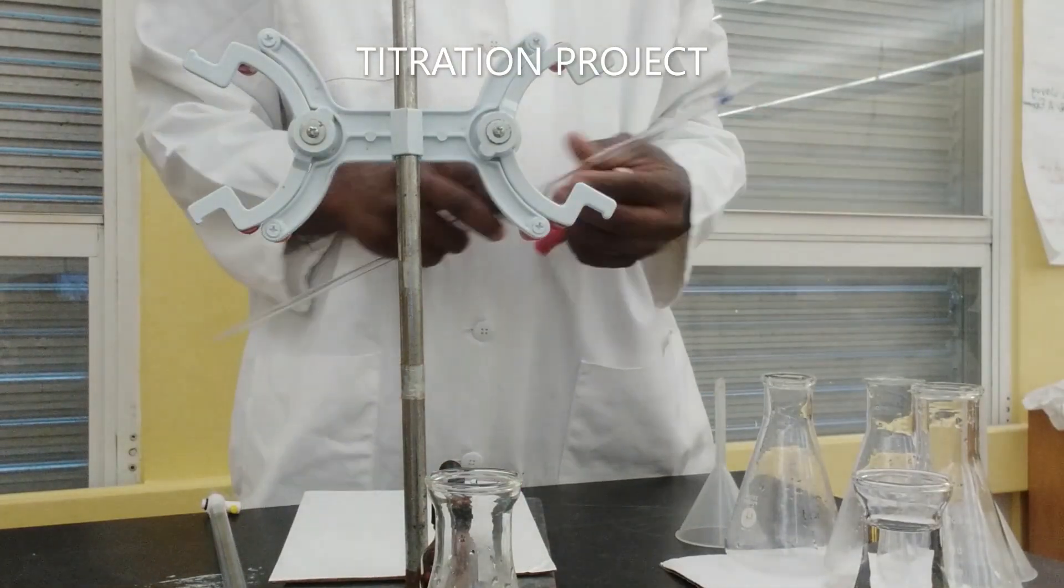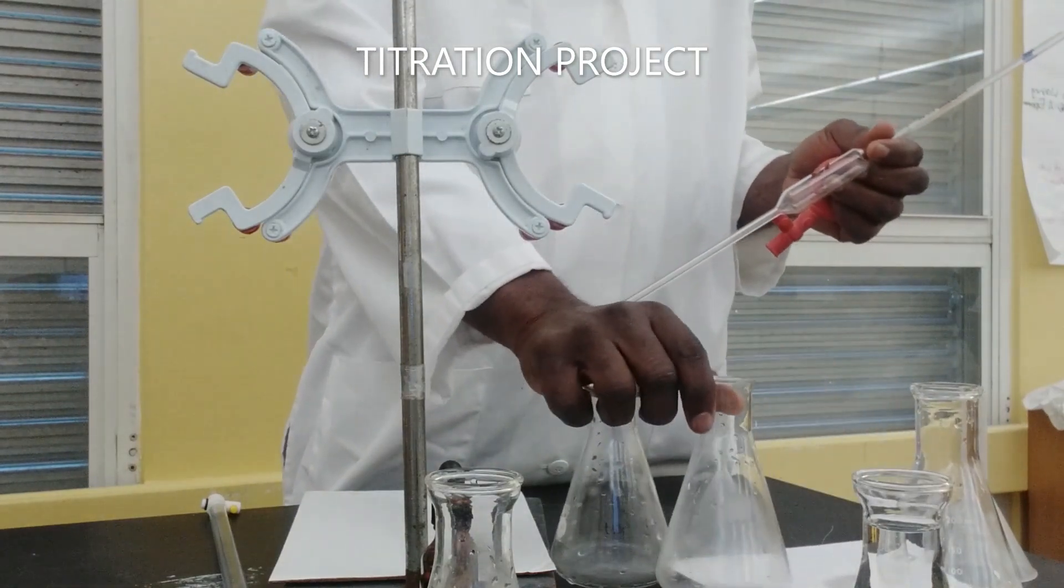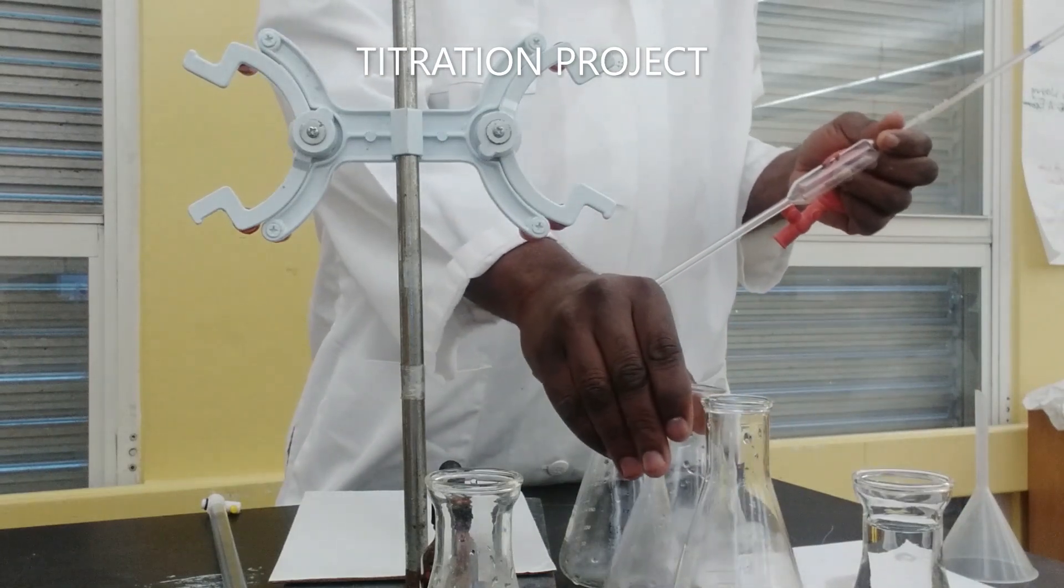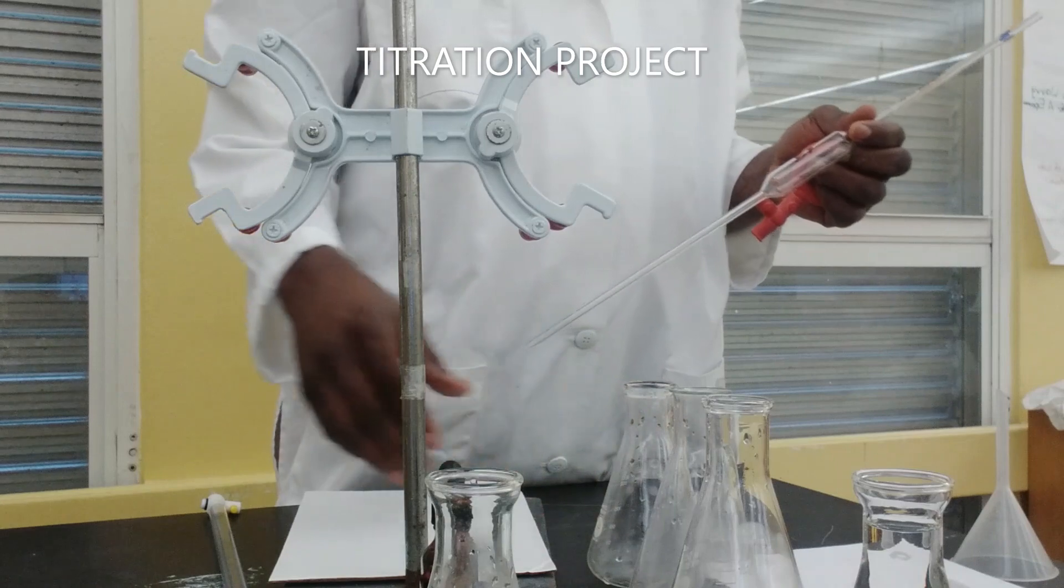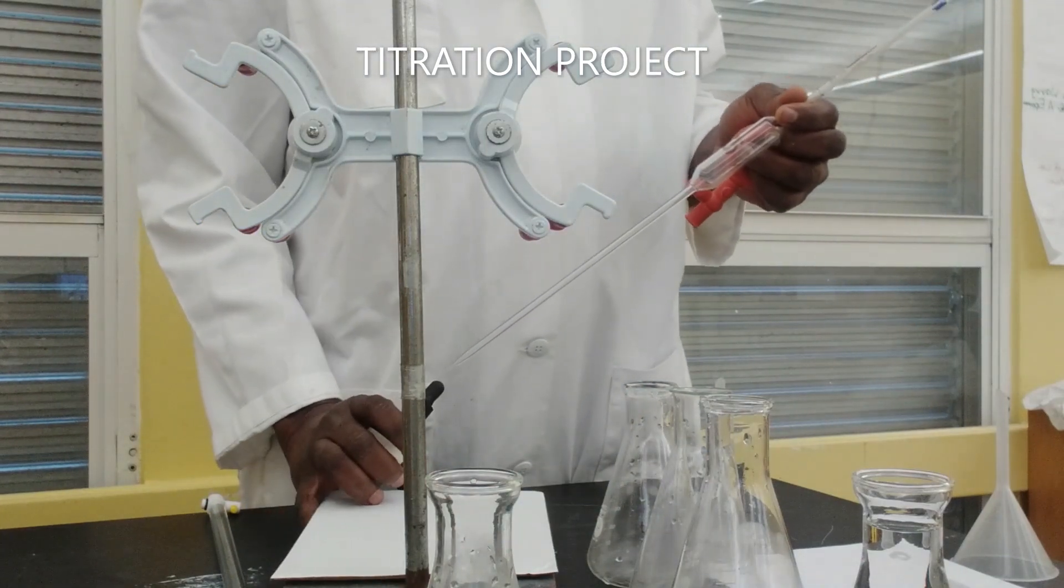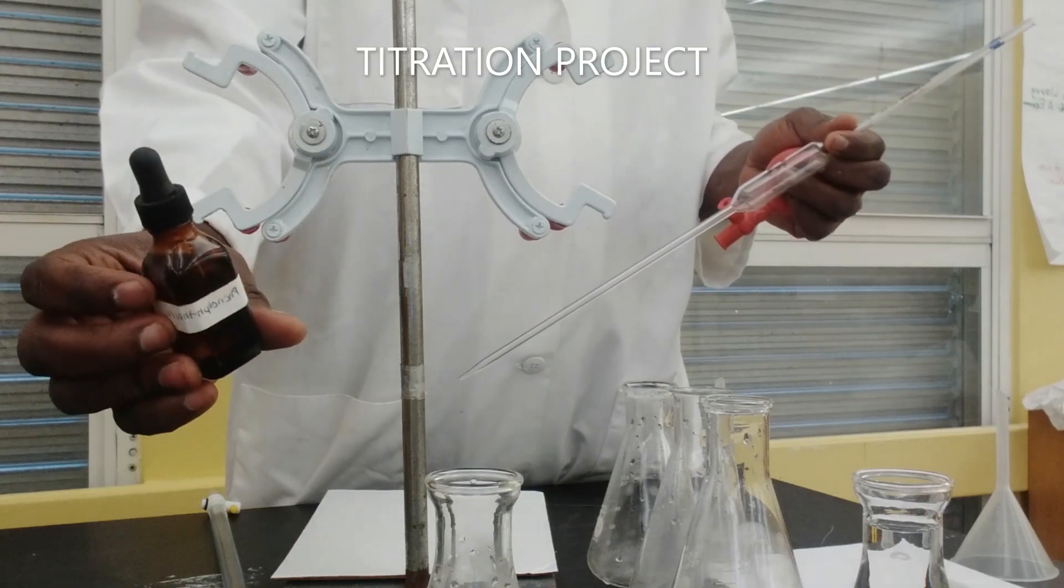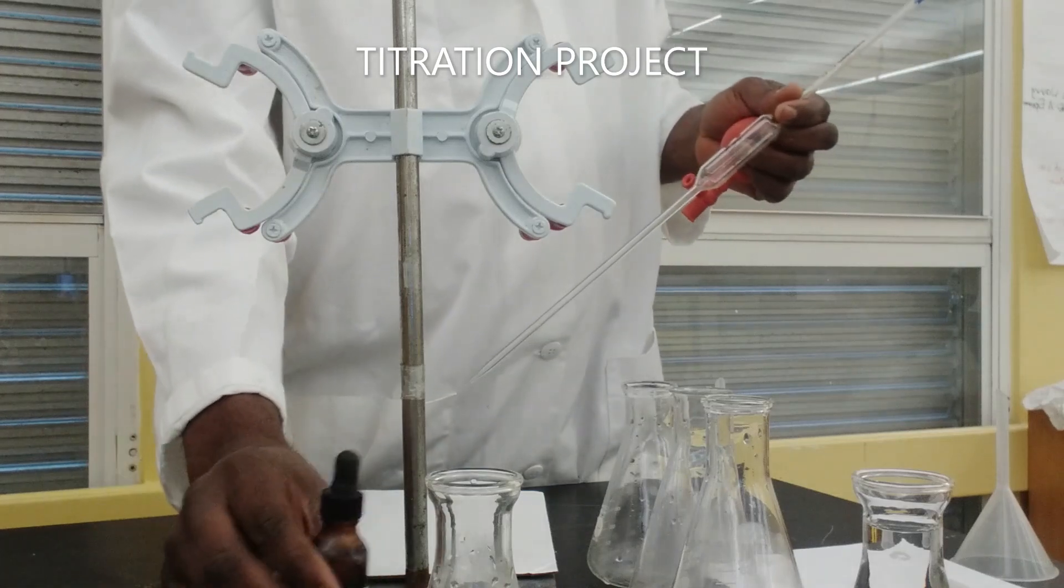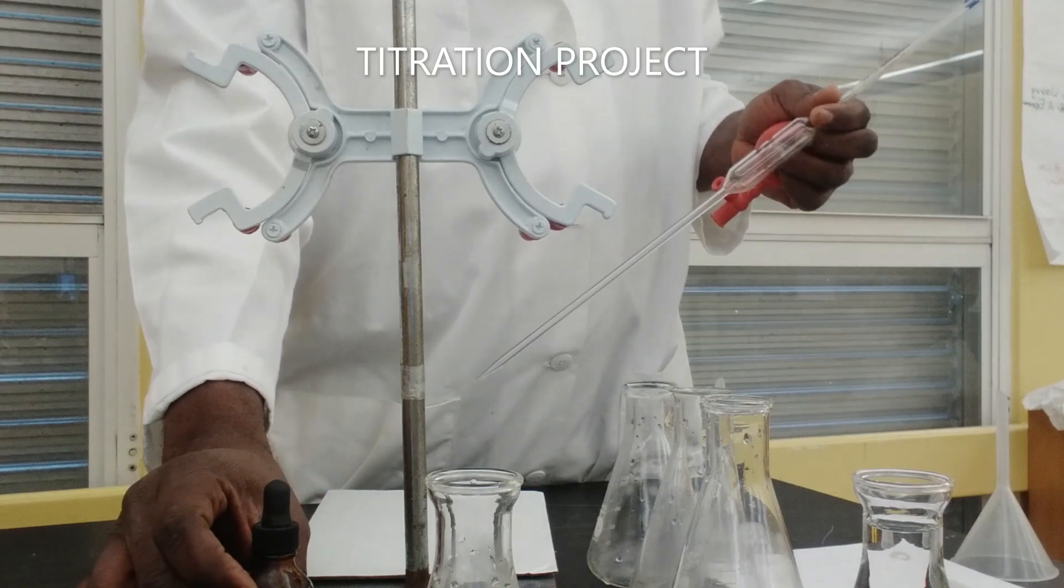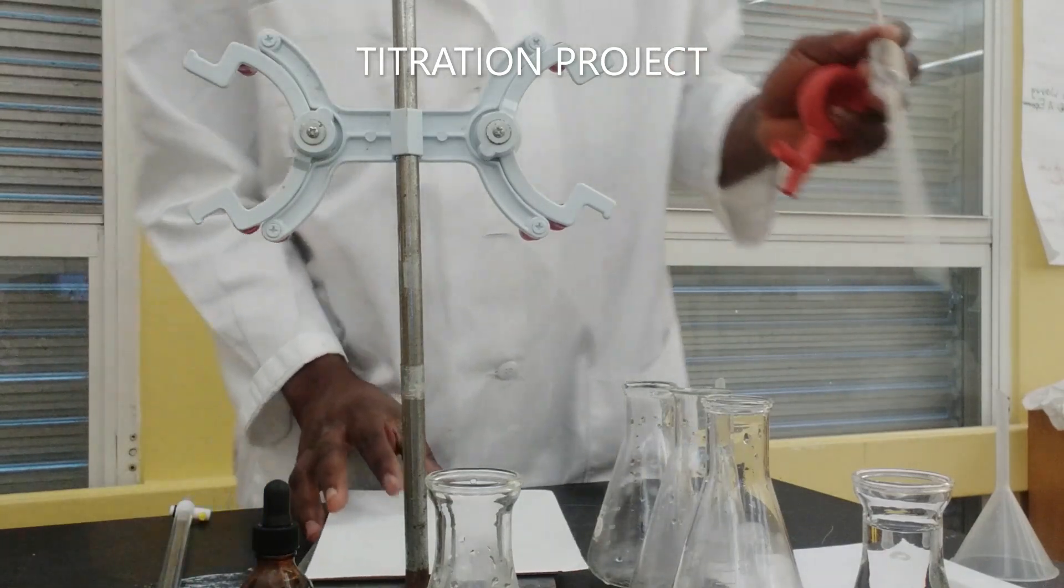We're going to go ahead and transfer our acid into three flasks. For this experiment, phenolphthalein indicator is much more advisable to use in this kind of weak acid, weak base titration.